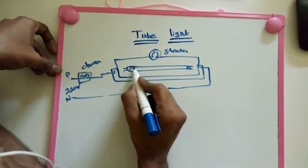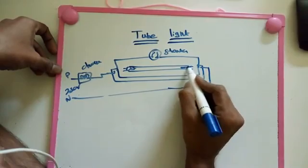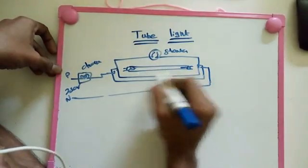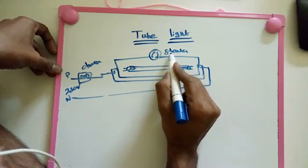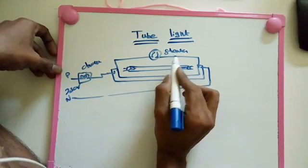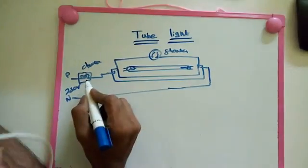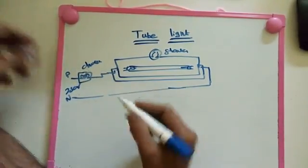The two filaments temporarily are going to connect through the starter. That's the purpose we use starter. I've explained. After that, starter, just see the choke. What's the work of choke?